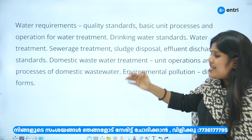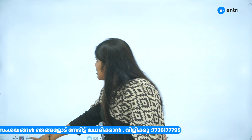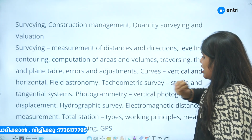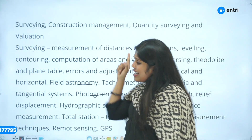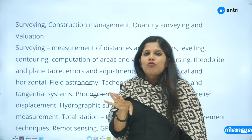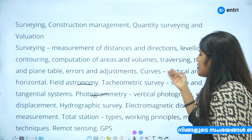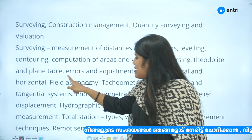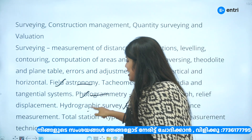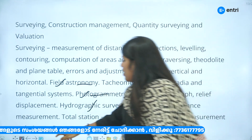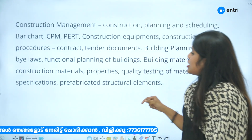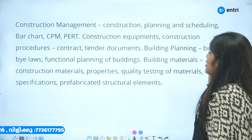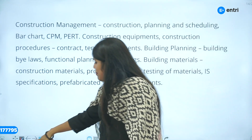Environmental engineering — complete syllabus as per the AE exam. Surveying and field astronomy, photogrammetry, and hydrographic survey are included. These are common topics. Then construction management covers CPM, bar chart, building materials, and prefabricated construction.